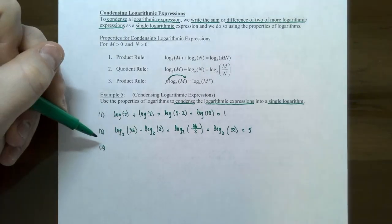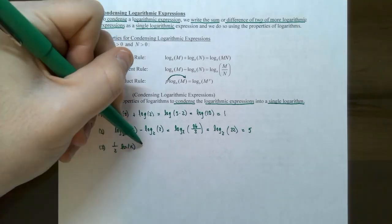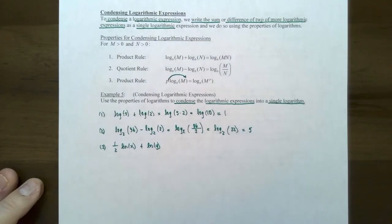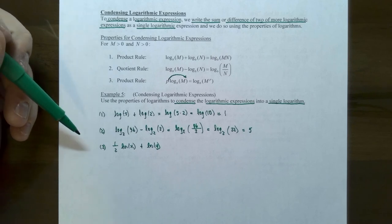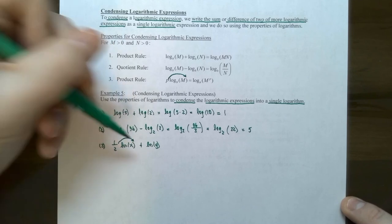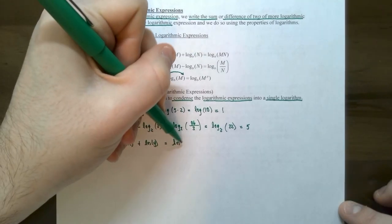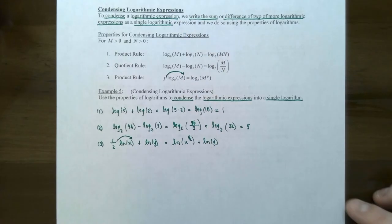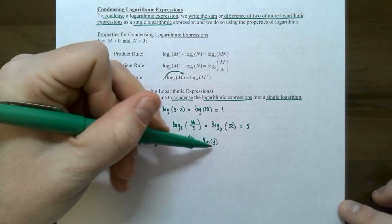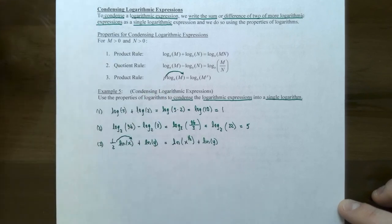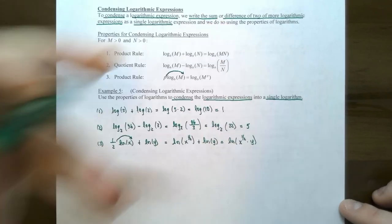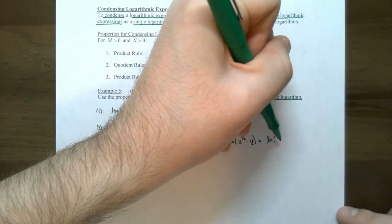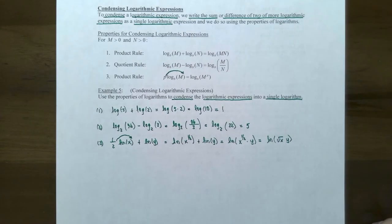Number three: one-half natural log of x plus natural log of y. We used the power rule last when expanding, so use the power rule first when condensing. Bring the one-half and make it a power: natural log of x to the one-half plus natural log of y. Now there's a plus between logarithms with the same base, so use the product rule — multiply the arguments: natural log of x to the one-half times y, which can be rewritten as natural log of square root of x times y.